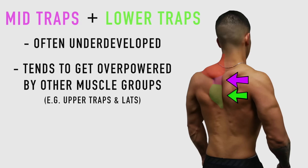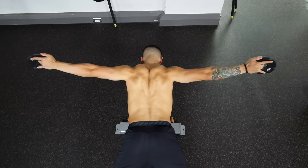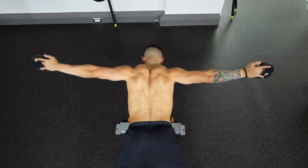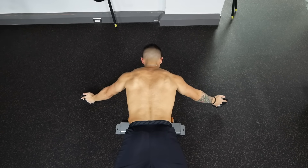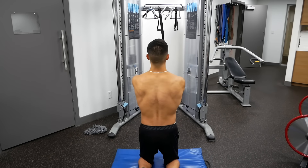Other more powerful muscle groups like the upper traps and the lats tend to overpower the mid and lower traps, which is detrimental since they not only help add extra definition to your back but also play a very important role in scapular stability, which is especially useful for preventing shoulder impingement. Therefore, ensuring that you're actually emphasizing each portion of the traps based on their function and anatomy is vital, and in this video I'll show you an evidence-based workout that does just that.